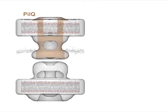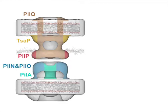Each protein component was then located within the system by imaging mutant strains with individual proteins either missing or fused to tags, and then calculating difference maps with respect to the wild-type structure. We used these difference maps together with prior knowledge of the structure and connectivity of the proteins to build the models as follows.